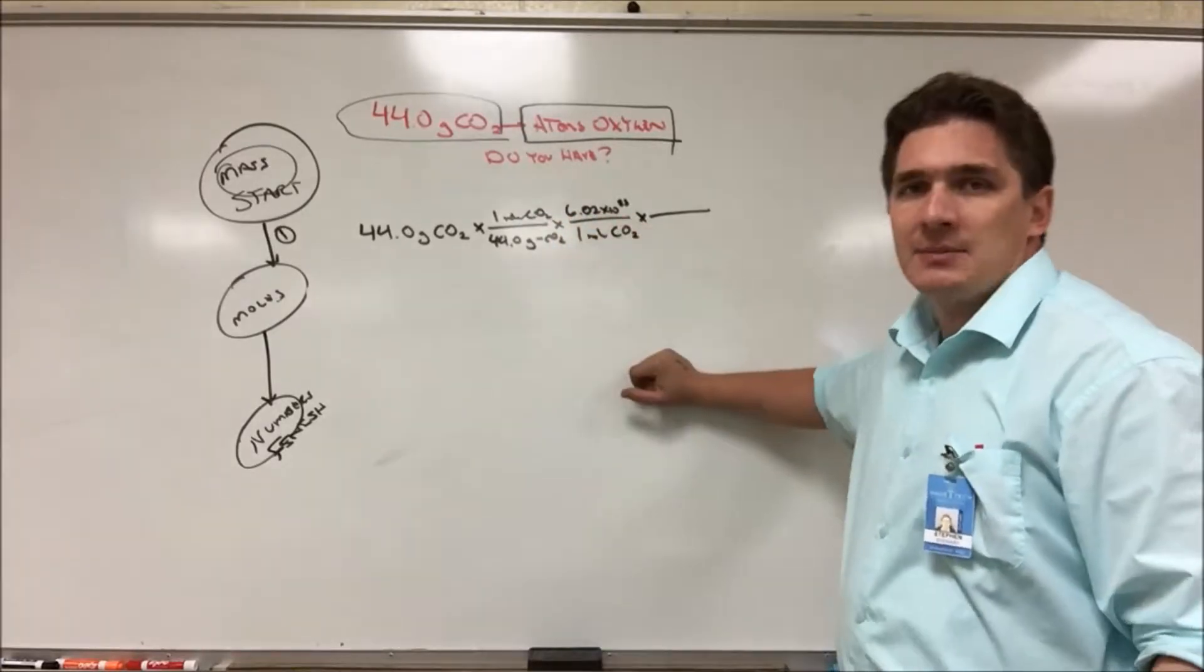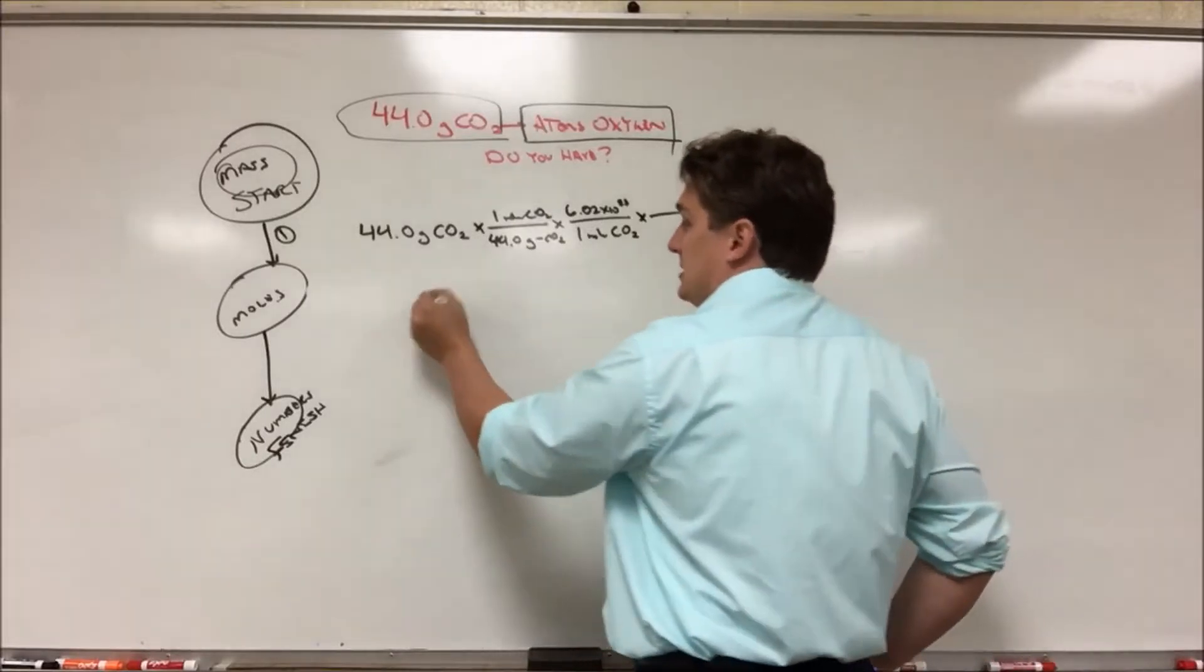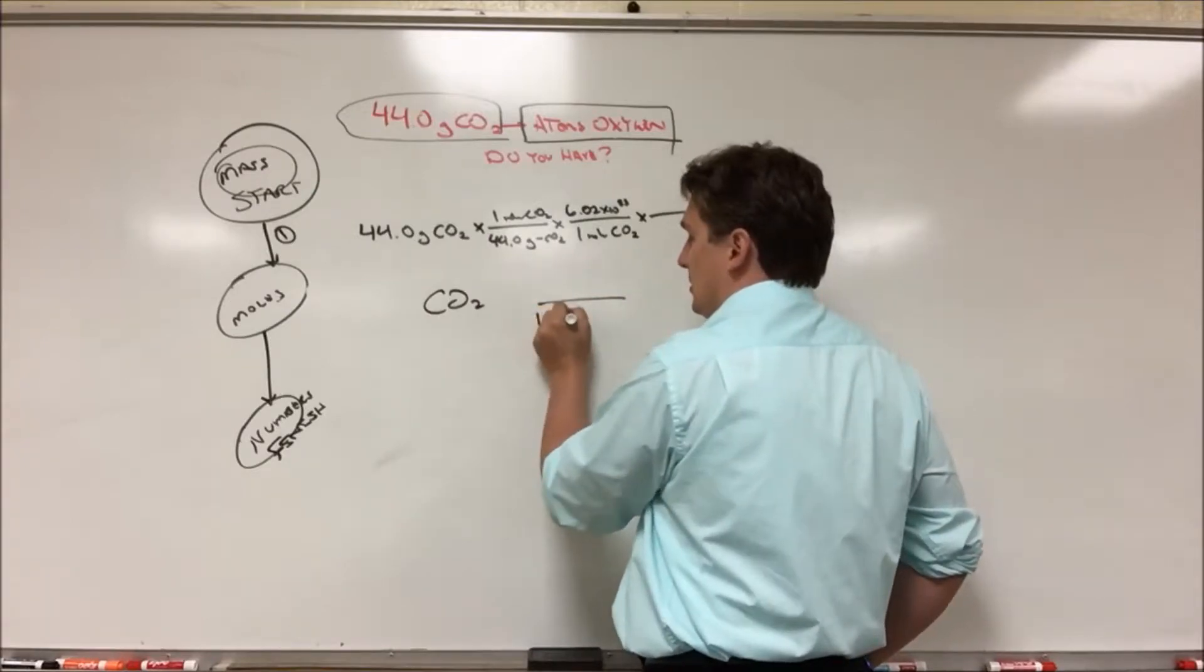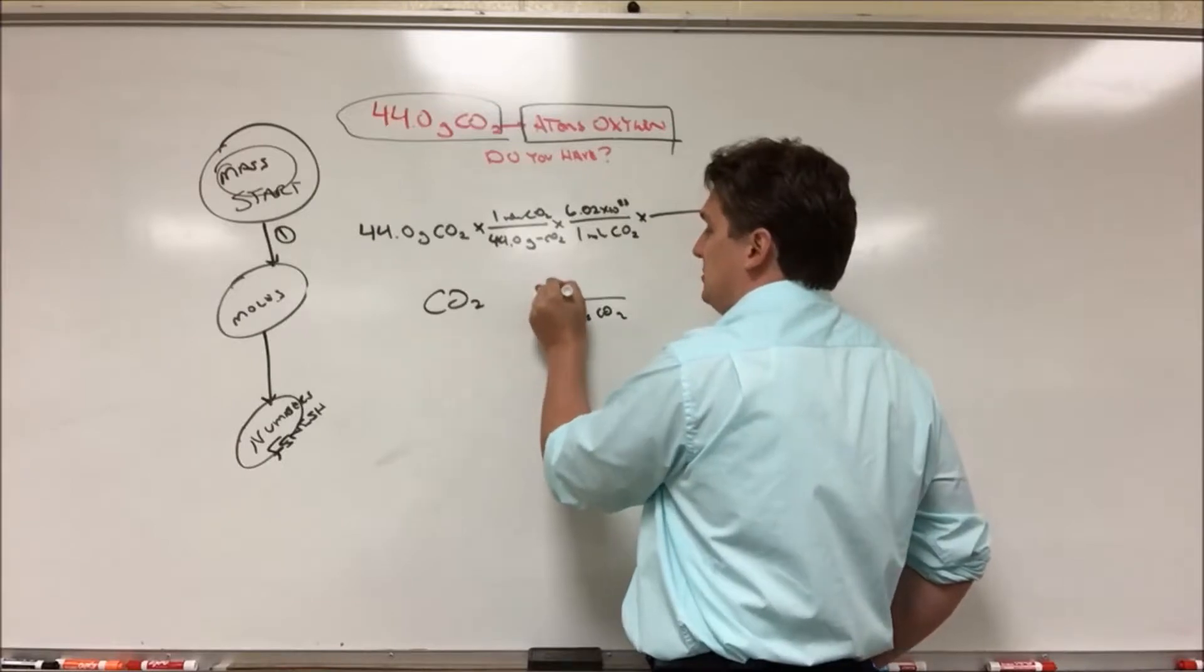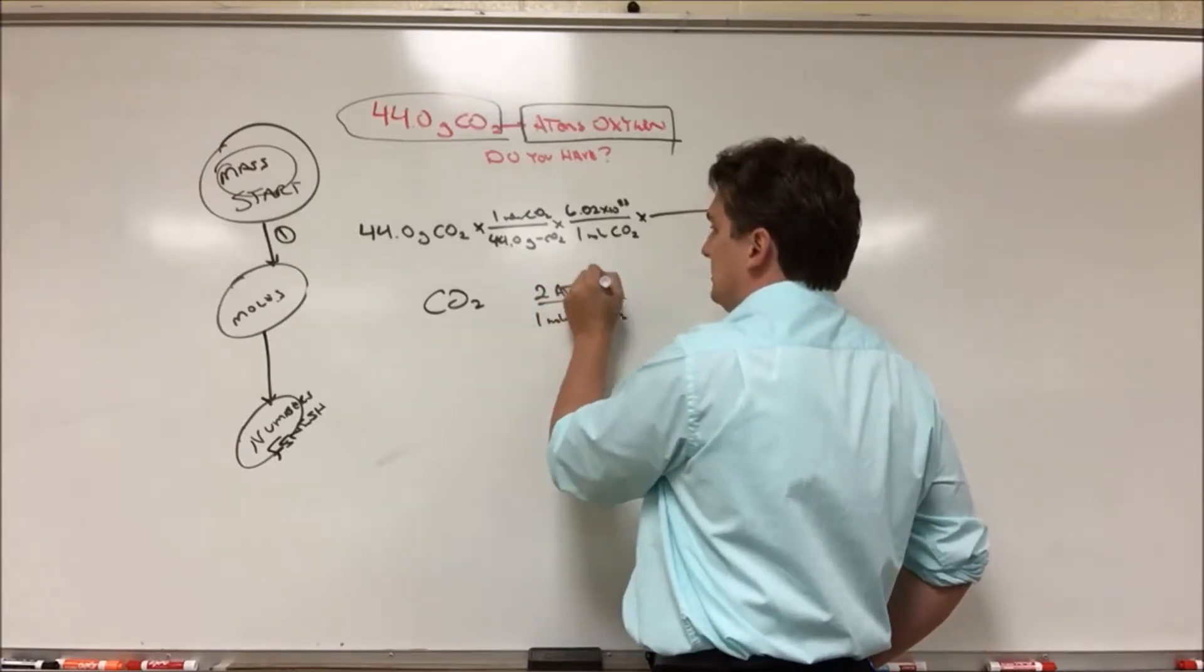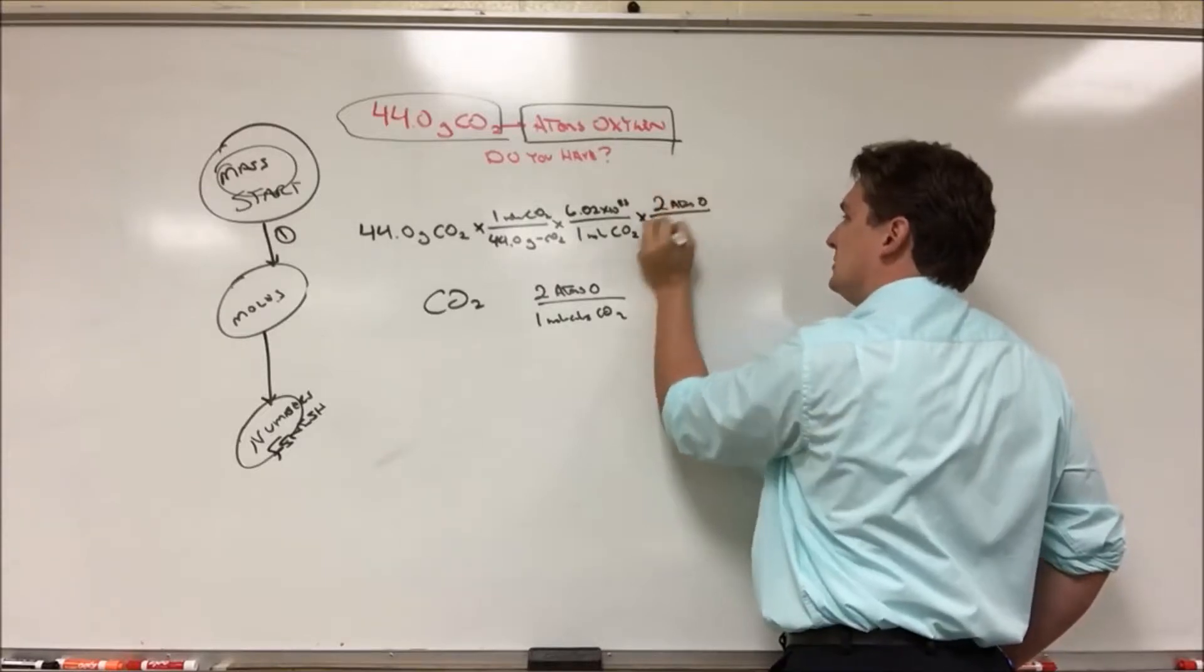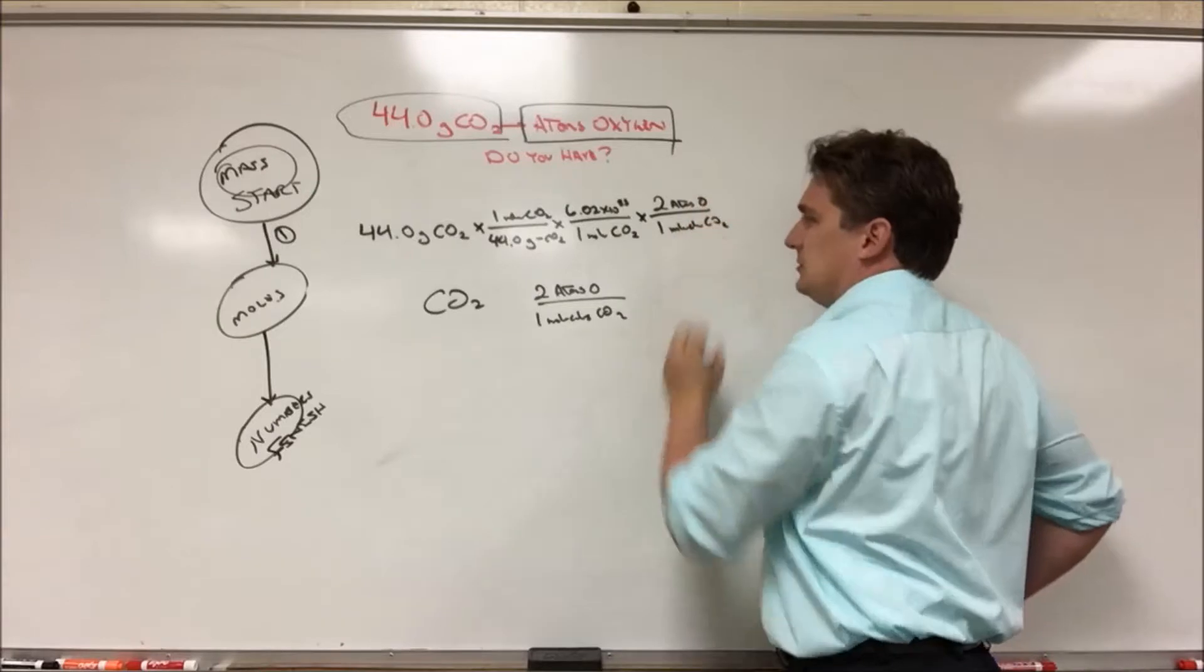Now that we're in atoms, we have to build up our conversion factor between CO2 and oxygen. So we've got CO2, we're coming from molecules of CO2, and our coefficient on oxygen here is going to be two atoms of O. So this will give us two atoms of O for every one molecule CO2.